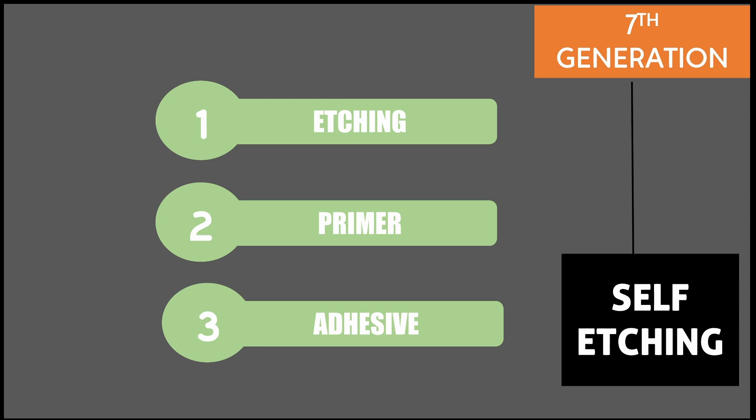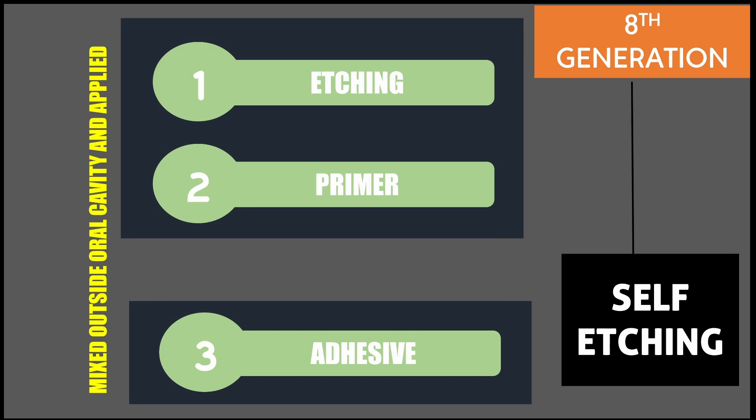The seventh generation bonding agent has an inherent problem of limited shelf life. To overcome this, the eighth generation bonding agent is available in two bottles. One drop from each bottle is mixed outside the oral cavity and then applied on the prepared tooth. This is different from the seventh generation, where all components are in a single bottle applied directly. The chances for post-operative sensitivity are also greatly reduced in the self-etch systems compared to etch-and-rinse systems.